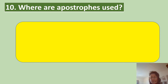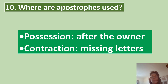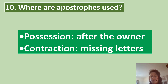Where are apostrophes used? They are used in possession after the owner — for example, 'the cat's whiskers', and the apostrophe would go between 'cat' and 's' as the owner is the cat. And contraction — missing letters — such as 'o'clock', where the apostrophe goes between the 'o' and the 'clock', or 'won't', where the apostrophe goes between the 'n' and the 't'.